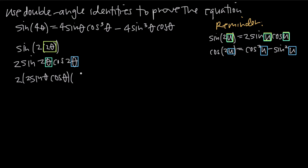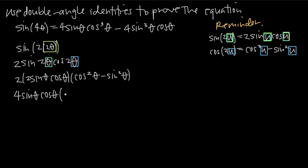So cosine of 2u becomes cosine squared of theta minus sine squared of theta. Now if we simplify a little bit, we can multiply the 2 by 2 here, and we'll get 4 sine theta cosine theta multiplied by cosine squared theta minus sine squared theta.